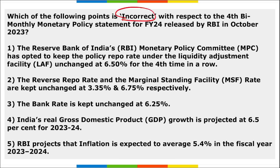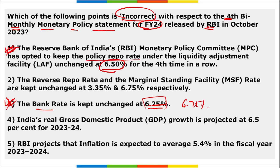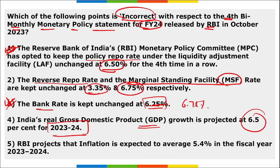Regarding the 4th Bi-Monthly Monetary Policy Statement for FY24 by RBI: option C is incorrect — it says the bank rate is kept unchanged at 6.25%, but actually the bank rate is 6.75%. The policy repo rate is 6.5%, reverse repo rate is 3.35%, marginal standing facility rate is 6.75%. GDP projected for FY23-24 is 6.5%, and RBI projected inflation to average 5.4% for FY23-24.